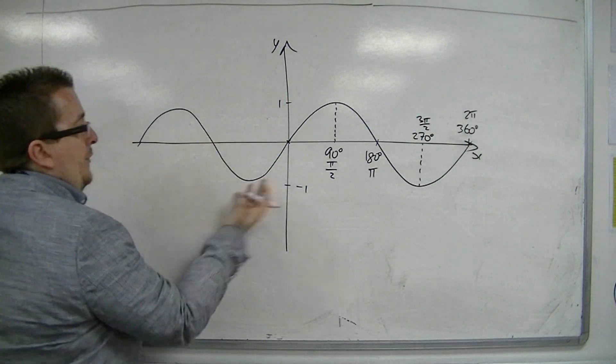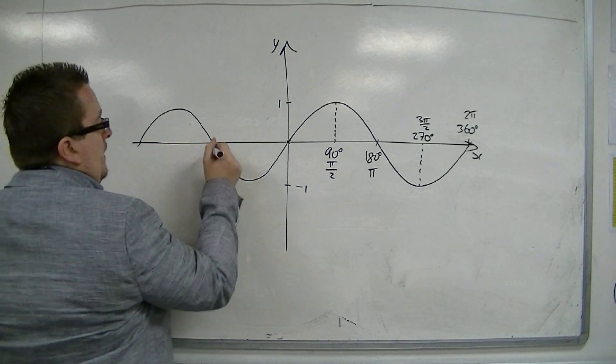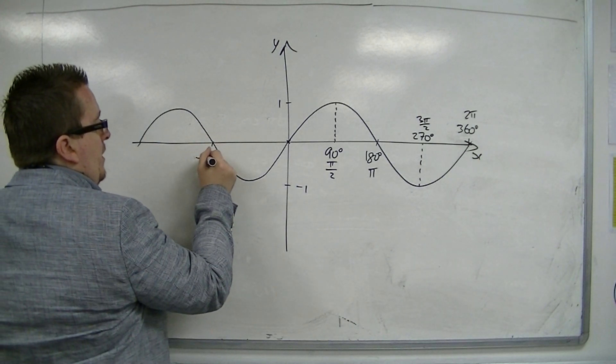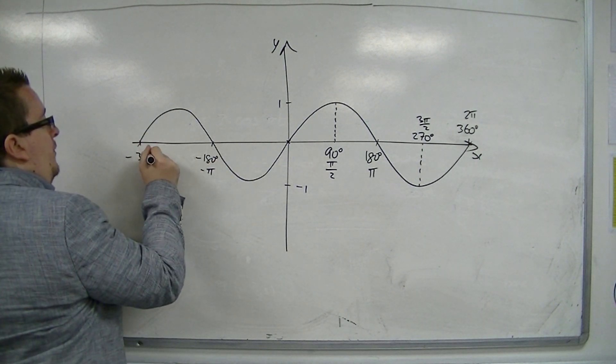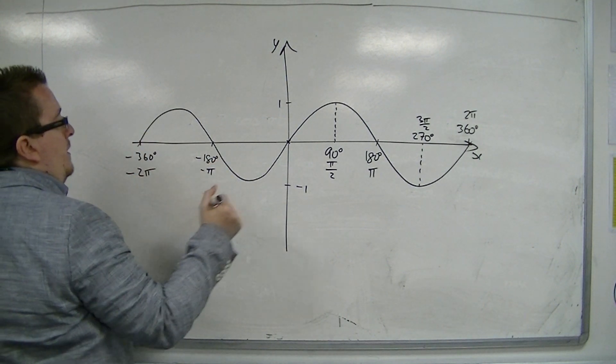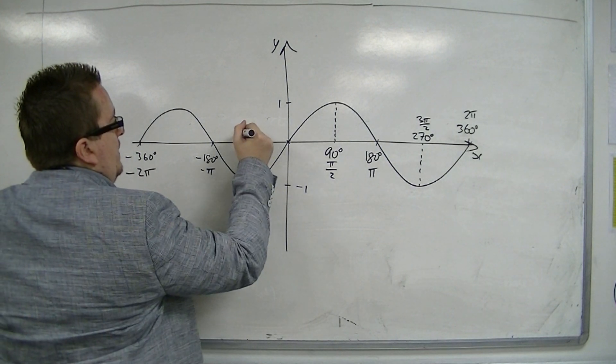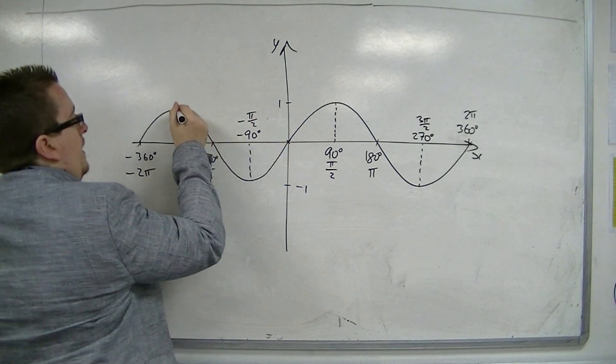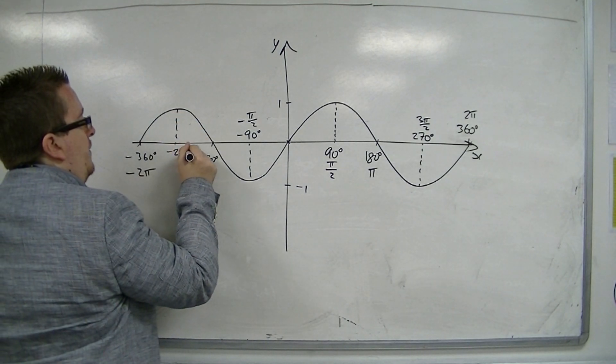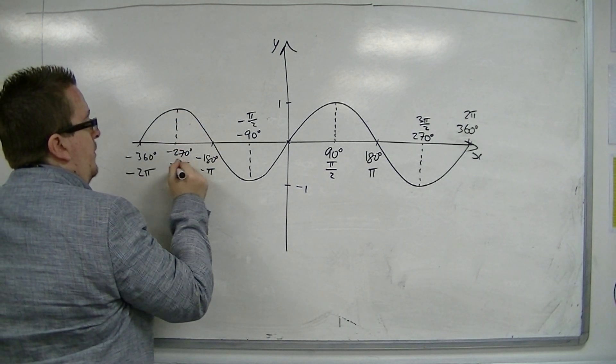And on the other side of the y-axis, you're looking at minus 180 degrees, or minus pi, minus 360 degrees, or minus 2 pi, minus 90, or minus pi over 2, and minus 270, or minus 3 pi over 2.